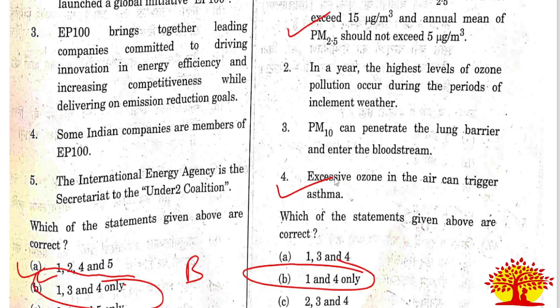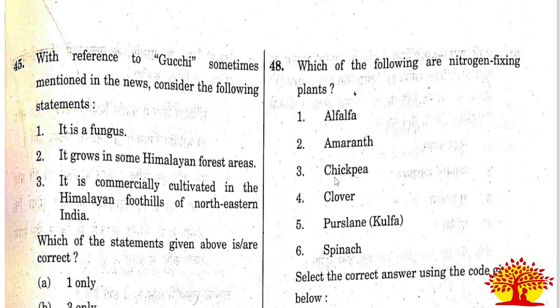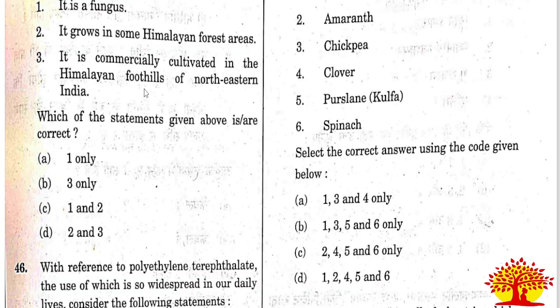Forty-fifth question on Gucchi, sometimes mentioned in the news: Option C, statements 1 and 2, are correct. The GI tag has been sought for one of the costliest mushrooms in the world that grows in Jammu and Kashmir's Doda district. Gucchi mushroom is a species of fungus. Statement 1 - it is a fungus - is correct. Statement 2 - it grows in Jammu and Kashmir's Doda district - is also correct.